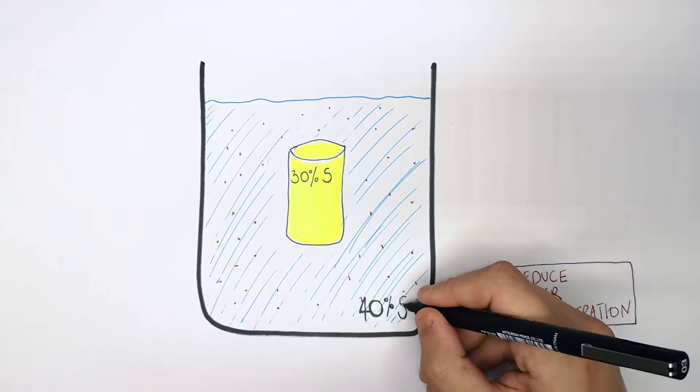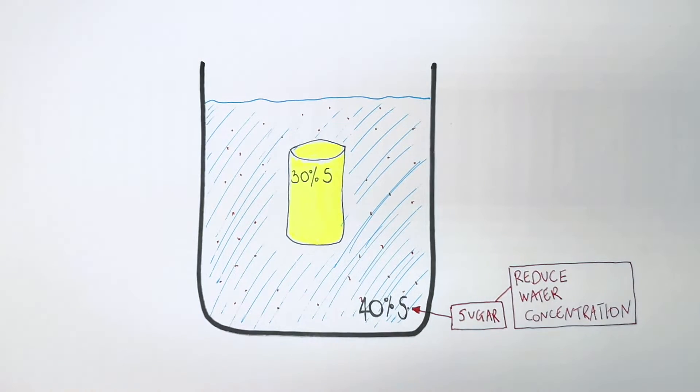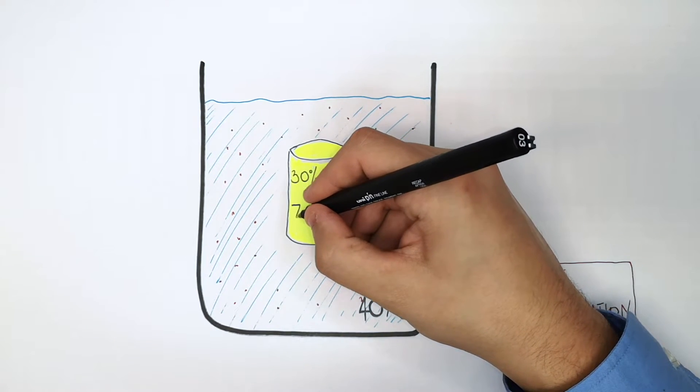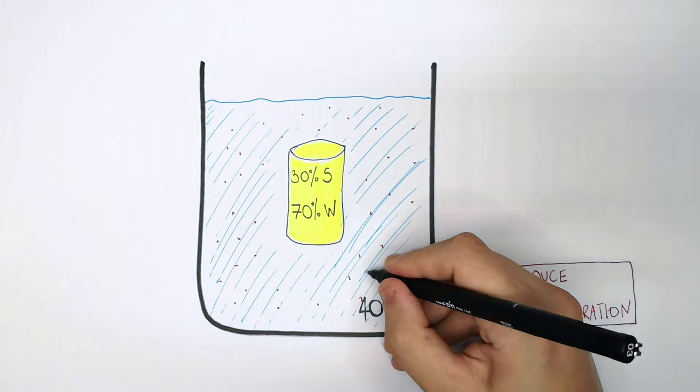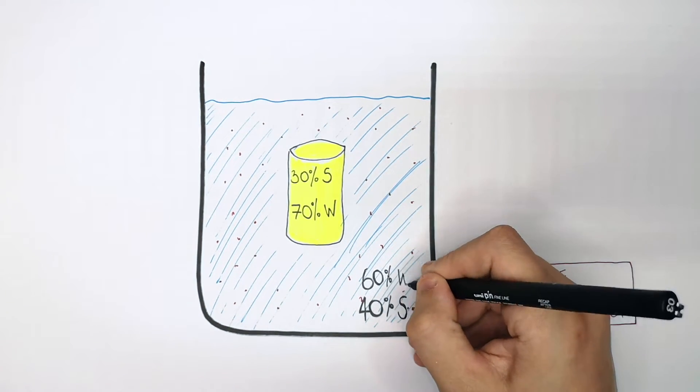So remember, rule number one, you use the sugar concentration to calculate the water concentration. So in the potato, it's 70% water. And in the beaker, it's 60% water. That is step number one.